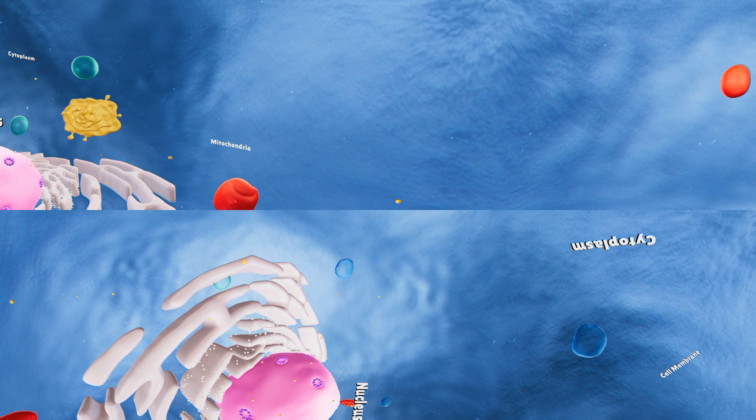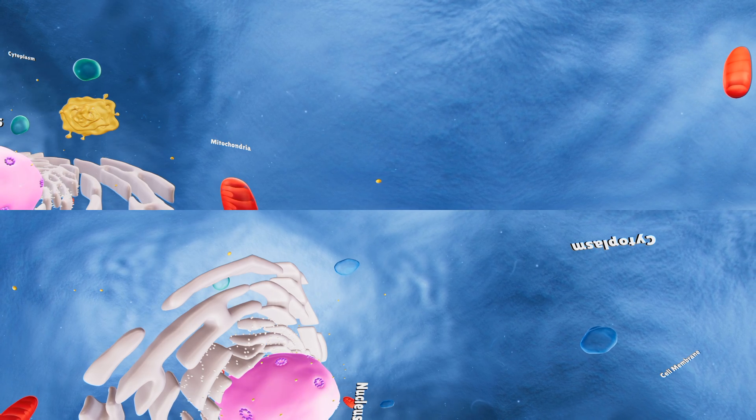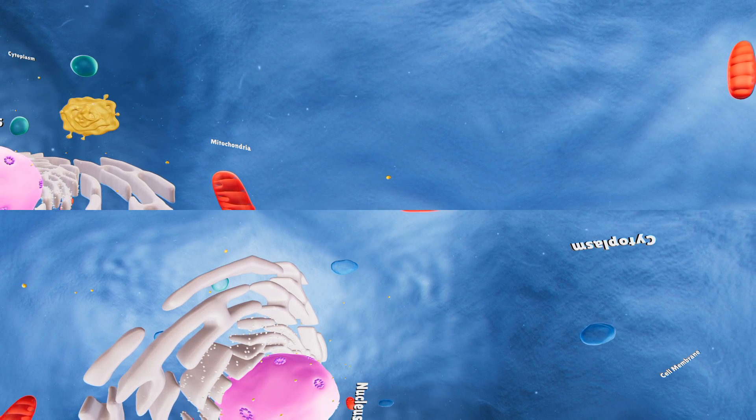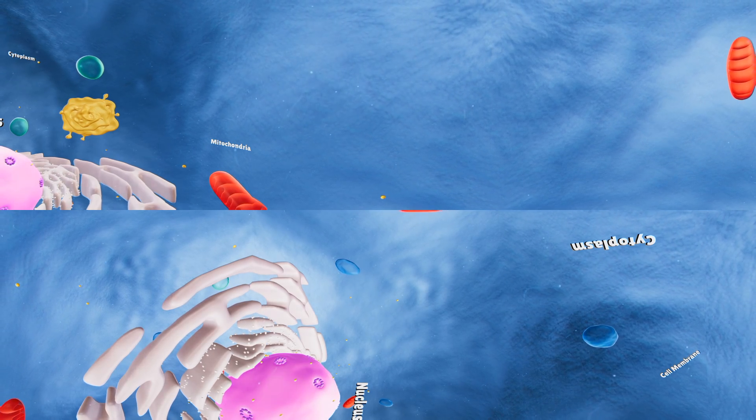And now, for the most important part of the cell, the nucleus. This organelle is also known as the brain of the cell. It contains most of the cell's genetic material.